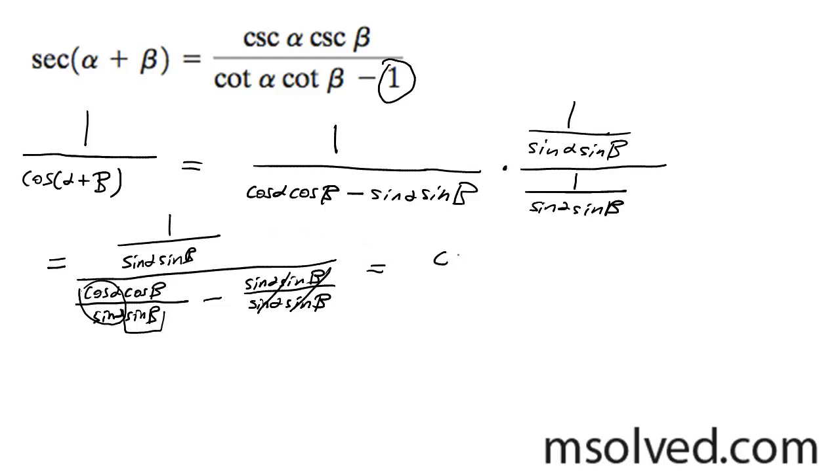So this is rewritten as cosecant alpha, cosecant beta all over cotangent alpha, cotangent beta minus 1. And that's it.